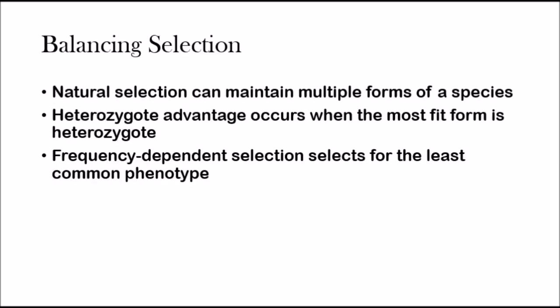Balancing selection means natural selection can maintain multiple forms of a species. You can see this in two ways: the first type is the heterozygote advantage, and the second is frequency-dependent selection.